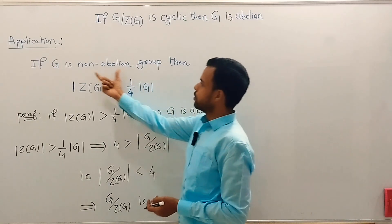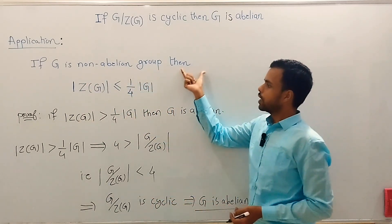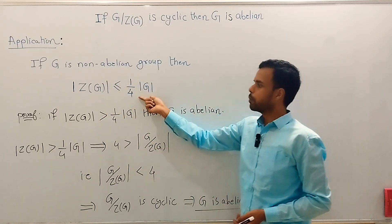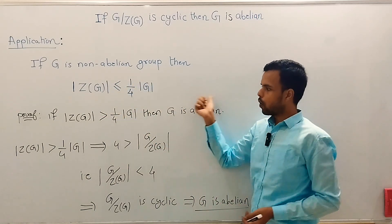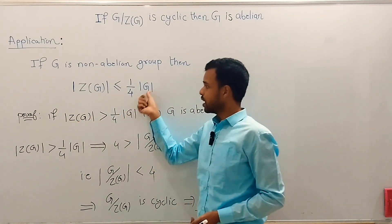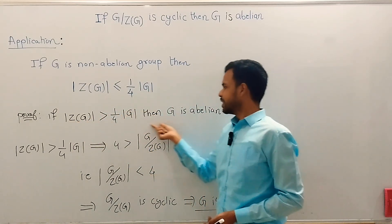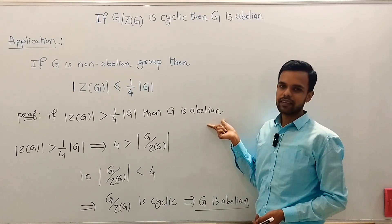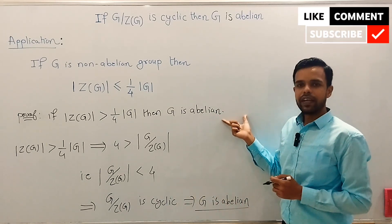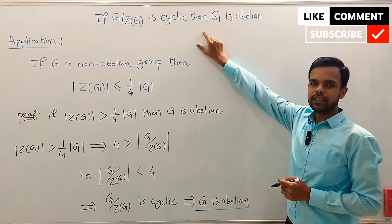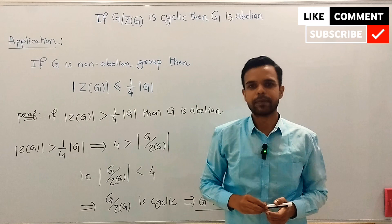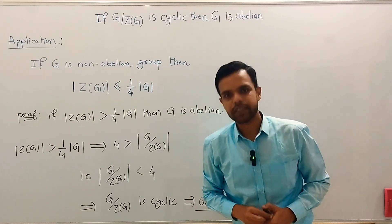Thus we see that if G is a non-abelian group then the order of the center Z(G) is always less than or equal to one-fourth times the order of G. Or in other words, if the order of Z(G) is greater than one-fourth times the order of G then G is abelian. This is a very nice application of this beautiful result. If you found this video interesting and helpful then please like, share, and subscribe to our YouTube channel. Thank you for watching.